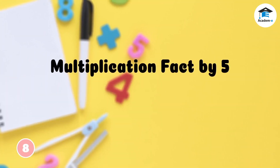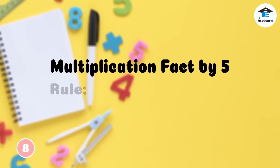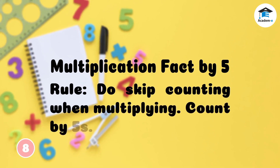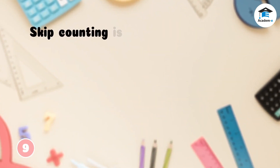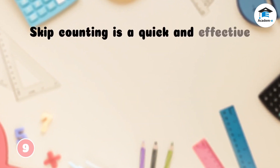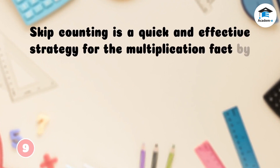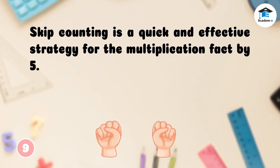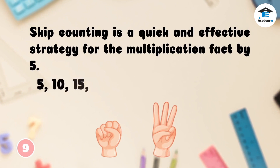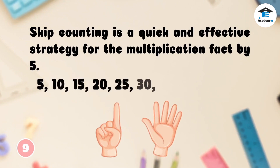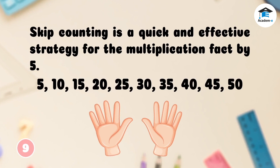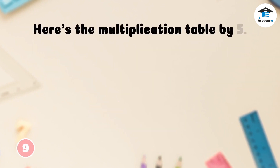Now we move on to the multiplication fact by 5. The rule for the multiplication fact by 5 is to do skip counting. Skip counting is a quick and effective strategy for the multiplication fact by 5 because counting by 5 is the easiest to skip count. Let's try it — are you ready? 5, 10, 15, 20, 25, 30, 35, 40, 45, 50, and so on. Here's the multiplication table by 5.